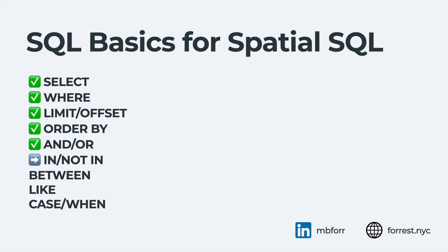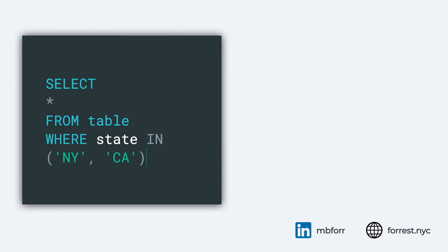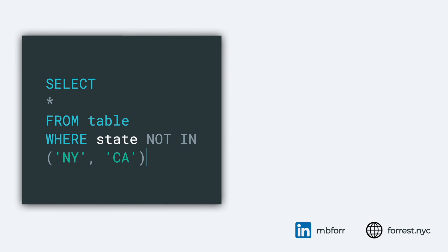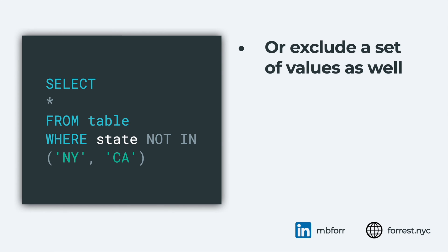IN and NOT IN: I like using these a lot because if you want to select five states, you don't need multiple WHERE clauses chained together — you can use IN. The syntax is: WHERE state IN ('NY', 'CA') with values separated by commas inside parentheses. This returns any row matching state 'NY' or 'CA'. NOT IN is the inverse — it returns all values where they don't match the list. You can also chain multiple IN or NOT IN conditions to structure your query further.